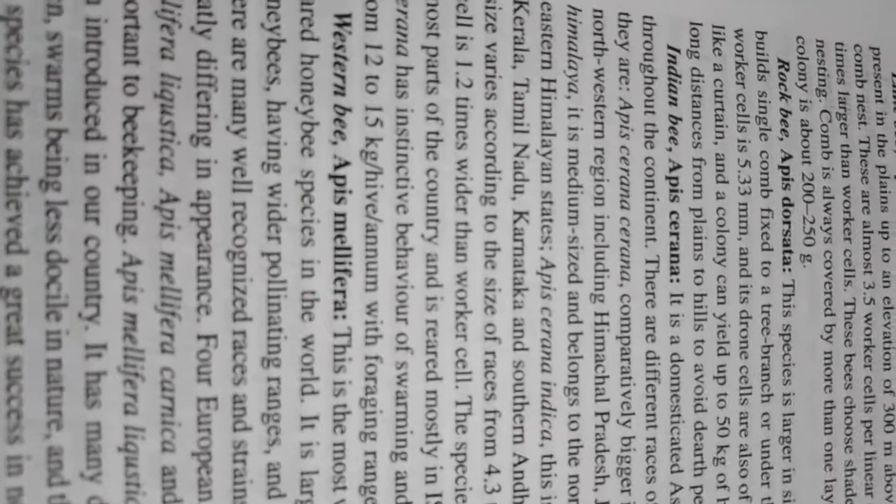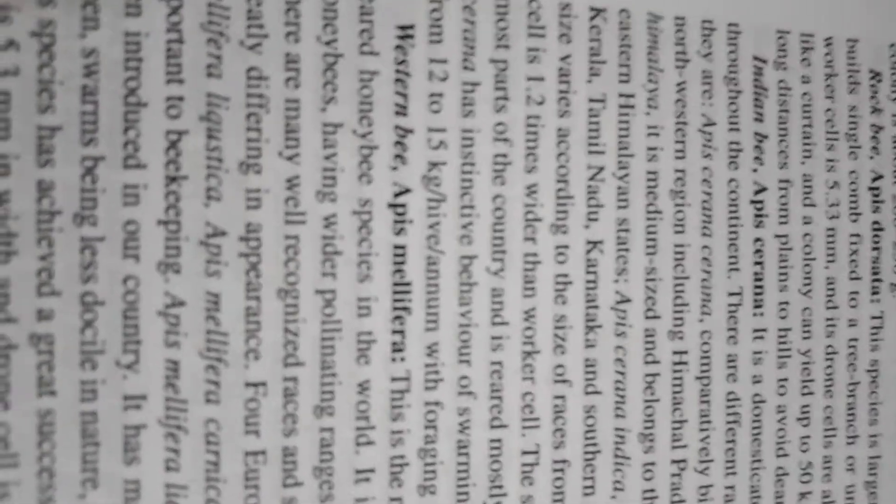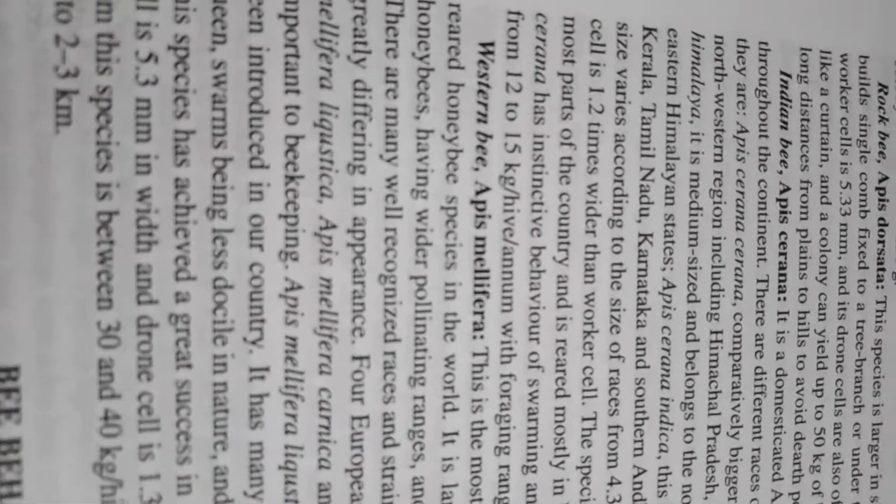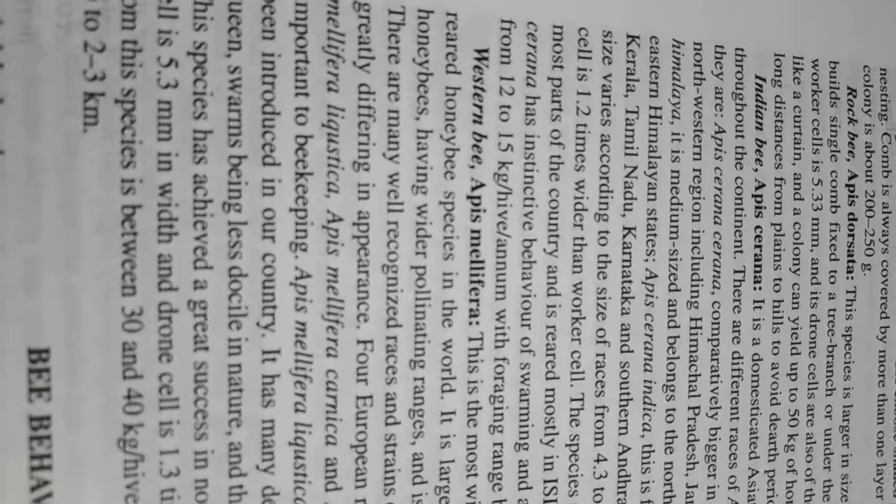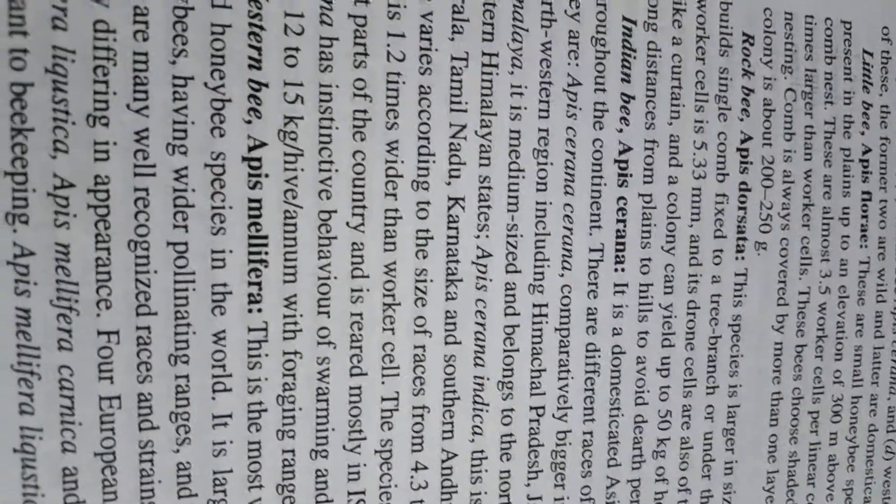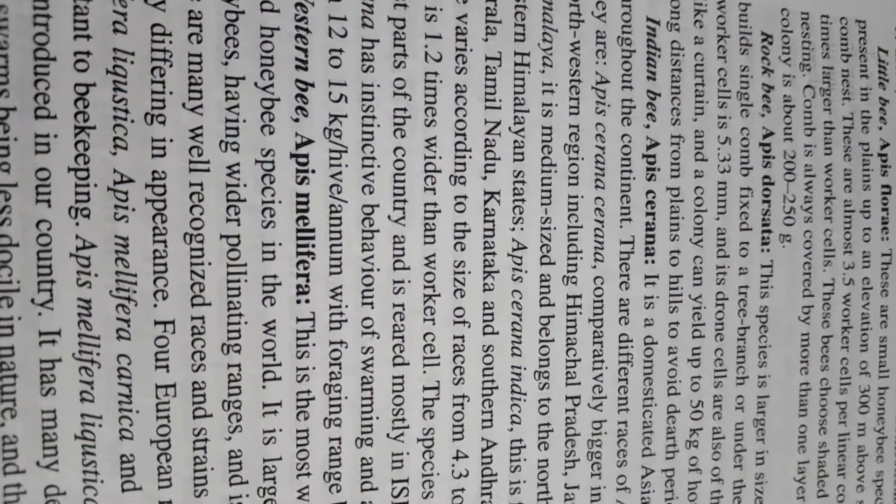And Indian bee is Apis cerana indica. 12 to 15 kg per hive per annum is the annual production. And another is Western bee. It is also called European bee. It is Apis mellifera. It is the best species of honey bee. Please remember it. And student please remember rock bee is Apis dorsata and it is not rearable. It is not domesticated. It is wild and it will be. Please remember it.